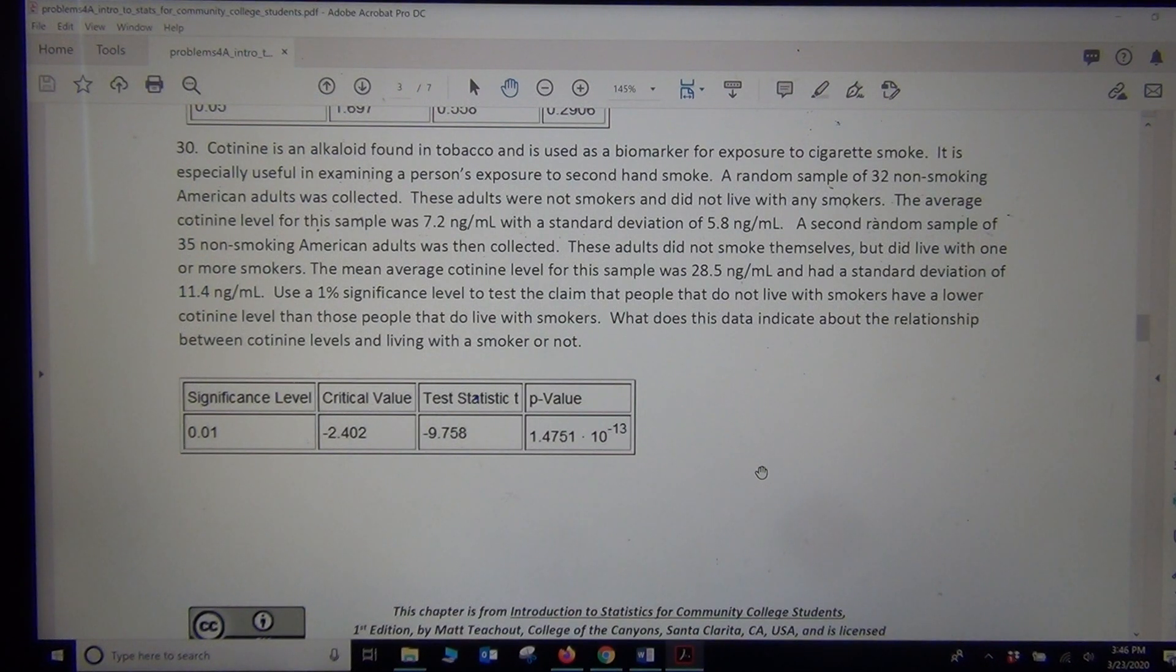The mean average cotinine level for this sample was 7.2, and the standard deviation was 5.8. A second random sample of 35 non-smoking Americans was then collected. These did not smoke themselves, but did live with one or more smokers. So the mean average cotinine level for this sample was 28.5, and a standard deviation of 11.4.